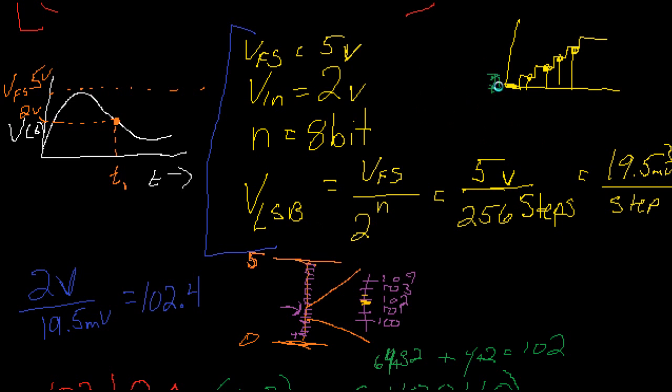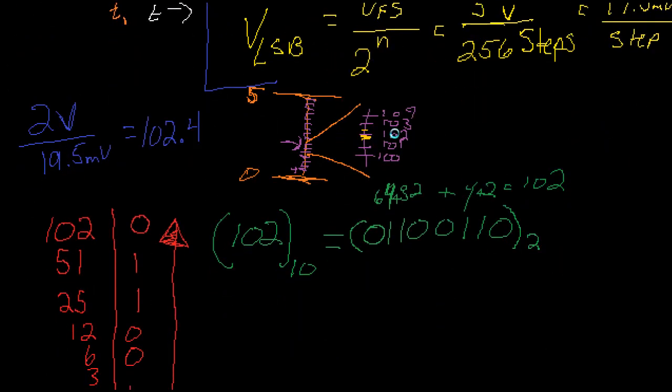We have 19.5 millivolt steps. How many steps to get to 2 volts? 102.4. Looking closer, we realize there's some quantization error as we round down to 102.